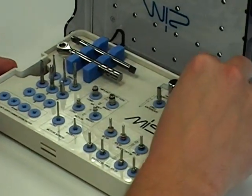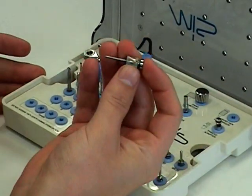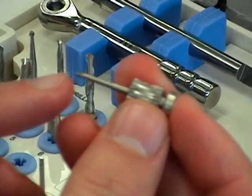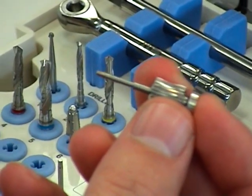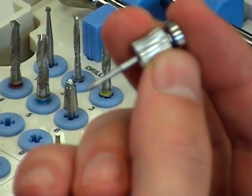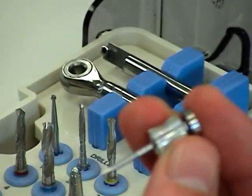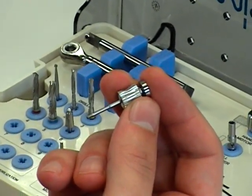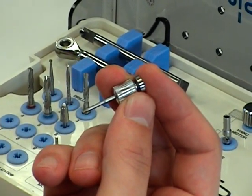First up, we've got our hand hex driver, .05 inch hex driver, also called a 1.25 millimeter. This is going to be used for a lot of applications, including removing the cover screws, healing caps, impression coping screws, and final abutment screws.